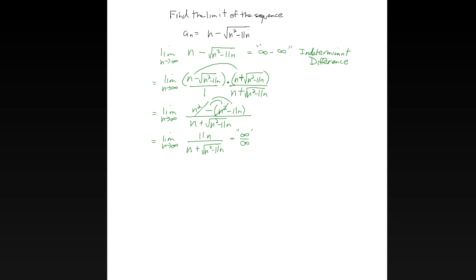Now it is of the form infinity over infinity, so we are ready to use L'Hôpital's rule. Take the derivative of the numerator and the derivative of the denominator. The root term is n squared minus 11n to the one-half, so its derivative is 1 over 2 square roots of that, times the derivative of the inside, 2n minus 11 — giving us 2n minus 11 over 2 square roots of n squared minus 11n.